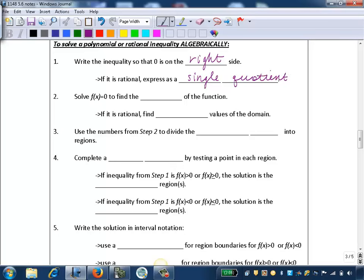Step 2: We're going to solve the equation f(x) equals 0. So we're going to set the function equal to 0 so that we can solve for the zeros of the function.